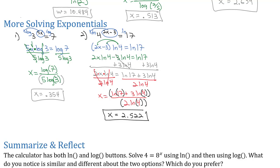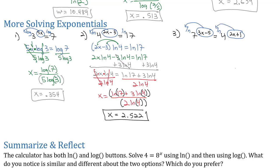Let's try one more example to get used to the algebra required for solving these exponentials. Let's solve 7 to the 3x minus 5 equals 4 to the 2x plus 1. We can use either log or natural log — I'm going to use natural log just because I'd rather write two letters instead of three. That's going to get the exponent out of there; the whole reason to take the log of both sides is to move the exponent to the front. Notice both sides had exponents, so both are going to move to the front of their respective logs.